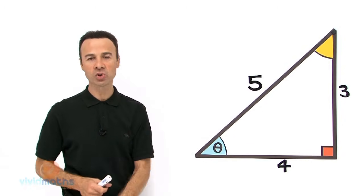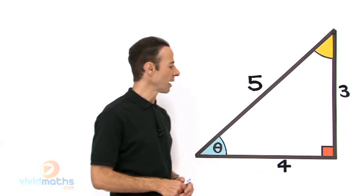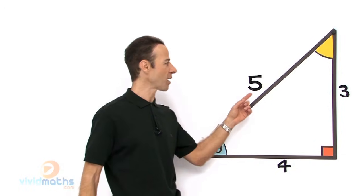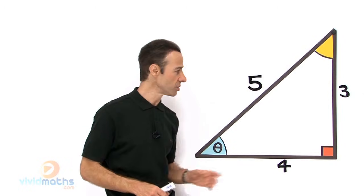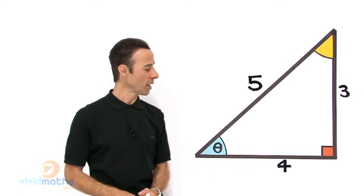We have a right angled triangle, there is a little right angle down there, and we have got angles around this and we have got lengths. Now the lengths we have is 5 for the hypotenuse, over here we have 3, and over here down the bottom on this length, we have 4.